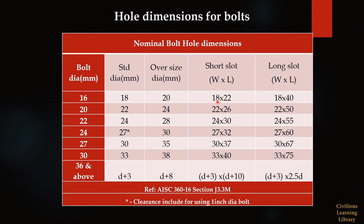Next is hole dimensions for bolts. We have standard dimensions for the holes. Here you can see the bolt diameter and the hole sizes for each corresponding bolt diameter. This is the standard hole diameter for a particular bolt. For example, for a 16mm diameter bolt, the standard hole dimension is 18mm. For a 20mm diameter bolt, the standard dimension is 22mm. Up to 24mm, the hole diameter is D plus 2mm.